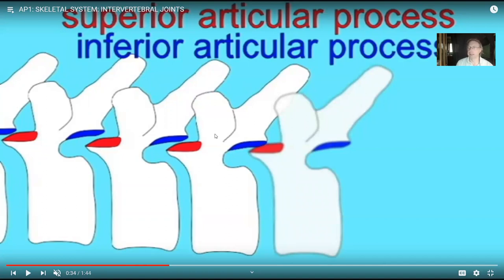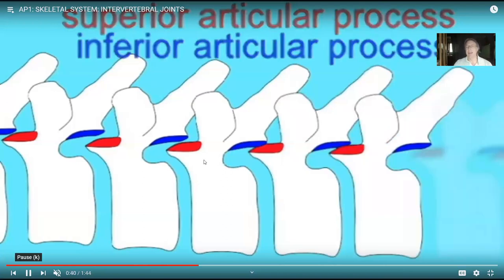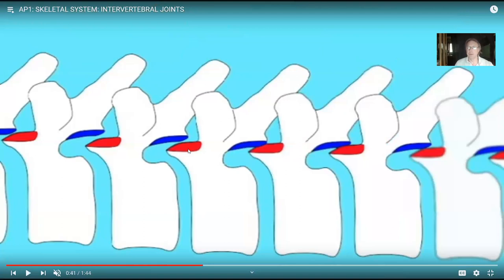Structurally, if you ask what is the nature of the contact between these articulating surfaces, you can have a fibrous joint if it's fibrous connective tissue like collagen which unites them, a cartilaginous joint if it's cartilage which unites them, or if there's a joint cavity, then it is a synovial joint. The synovial joints are diarthroses — they are freely movable.